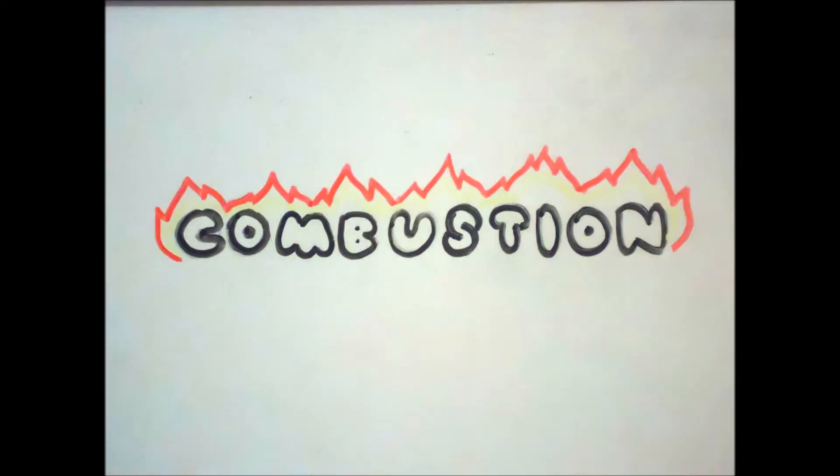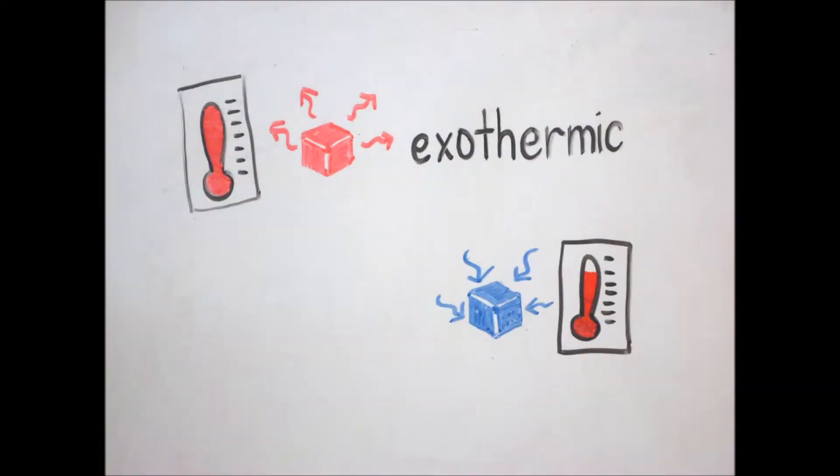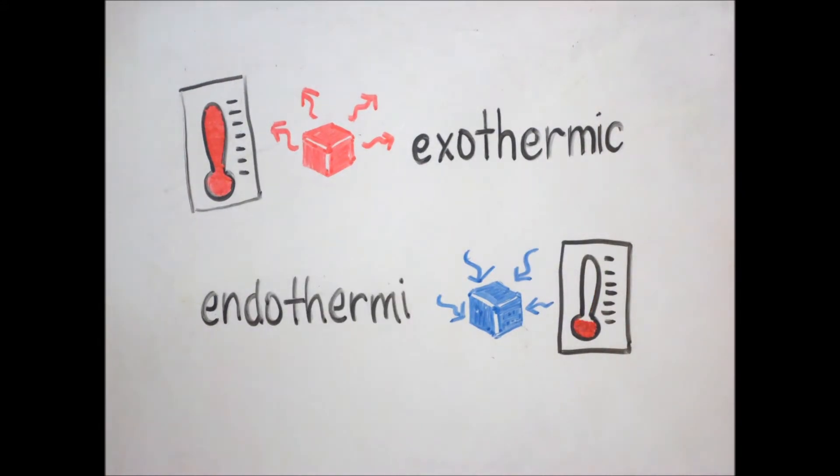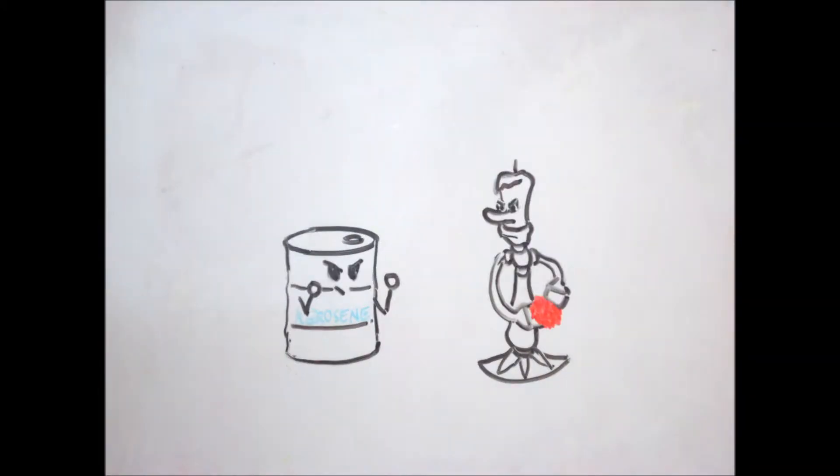In other words, combustion is simply burning. Reactions that release heat are called exothermic while reactions that absorb heat are called endothermic. Rockets rely on their propellant exhaust for thrust to be able to take off. Therefore, a good rocket fuel must be able to produce large amounts of energy to provide the force for the launch.